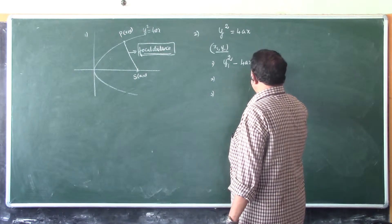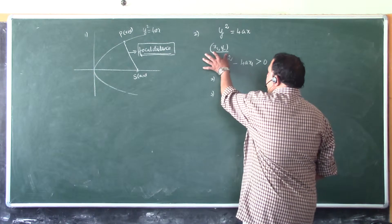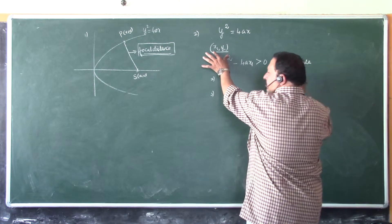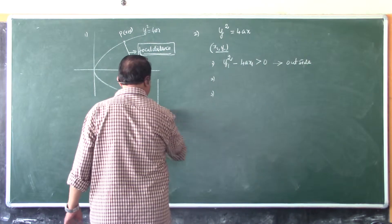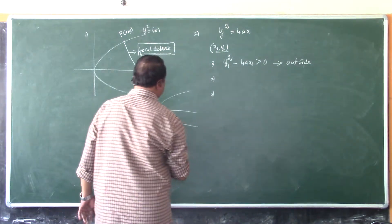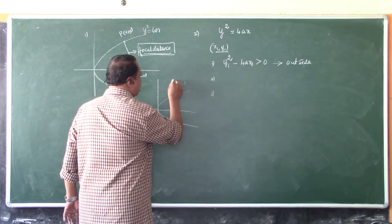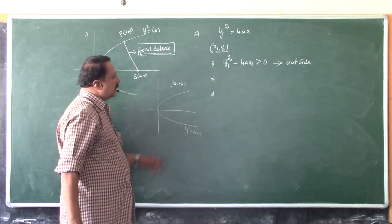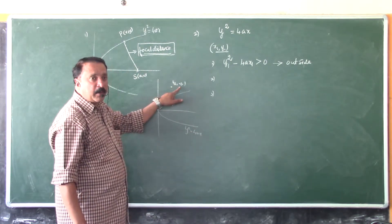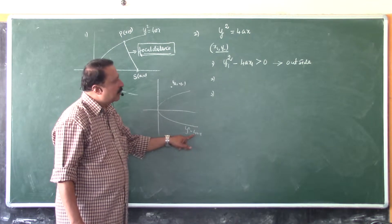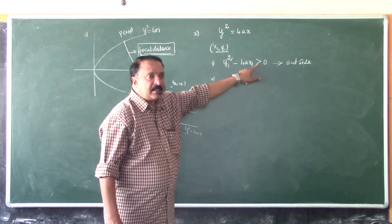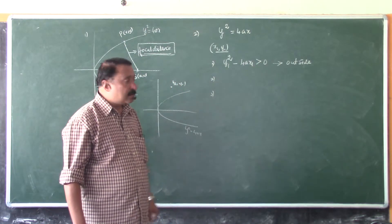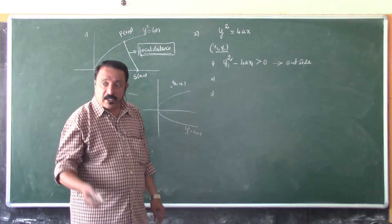If it is greater than zero, then the point x1, y1 lies outside the parabola. See, this is x1, y1. This is the parabola y² equals 4Ax. Now I substitute the coordinates of the point x1, y1 in the equation of the parabola and see that it is greater than zero. The final answer after substitution. Get it greater than zero. Then what is the conclusion? The point is outside.